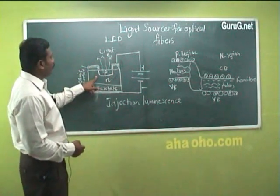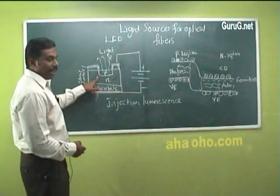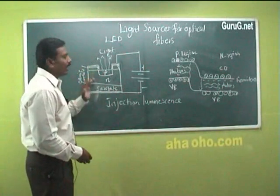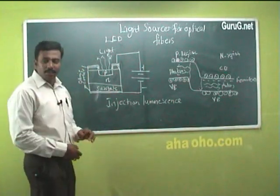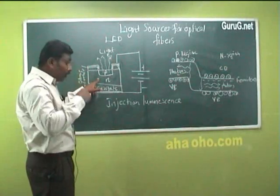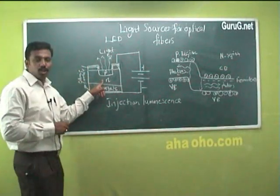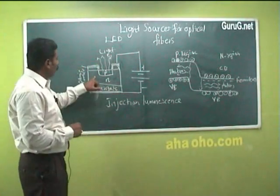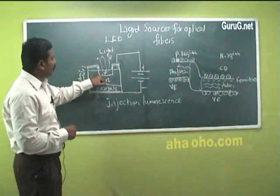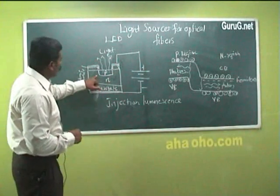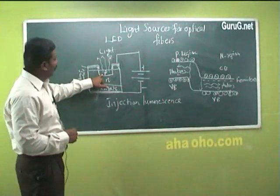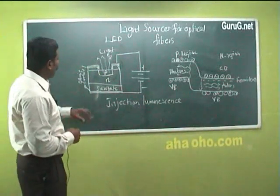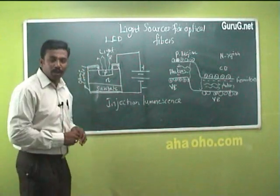The LED consists of a heavily doped P-N junction formed by doping silicon with gallium arsenide. Silicon is used as a dopant because it can act as both a donor and an acceptor. The upper part of the P-type material is left transparent for the emission of light energy, and ohmic contacts are made using aluminum.